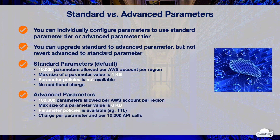The advanced parameter tier allows you to store 100,000 parameters per AWS account per region, with a maximum parameter value size of 8 kilobytes. When you create an advanced parameter, you can assign a parameter policy. Parameter policies let you specify a time to live and notifications that force updates to certain parameters such as passwords and license keys. Parameter Store charges per advanced parameter stored and per 10,000 API calls made.